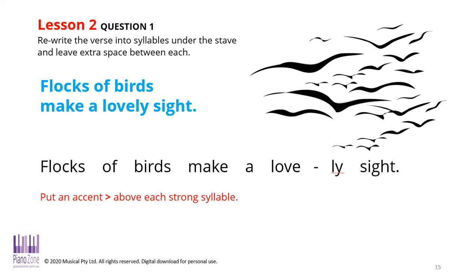We're going to start with this particular verse: 'Flocks of birds make a lovely sight.' When I'm speaking, I naturally have accents or strong parts. For example, Jane is just one syllable — pretty easy. You and I have the most boring names sadly because we've only got one sound. However, Vashko is interesting because we have a strong syllable on the first bit and a weak on the second — we say Vashko instead of Vashko.